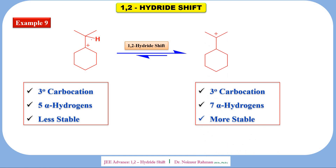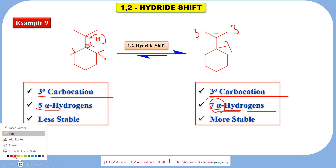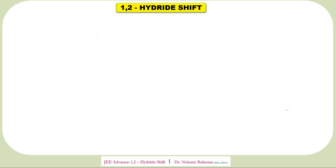Example nine: hydride shift takes place but the carbocation remains tertiary — no change in type. However, in the previous structure we had five alpha hydrogens. After 1,2-hydride shift: three here, three here, and one here — a total of seven alpha hydrogens. More alpha hydrogens means greater stability of the carbocation.